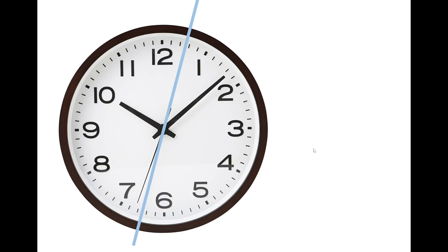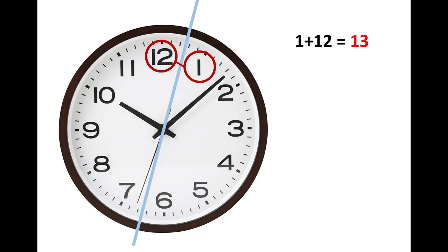If we consider a clock face and divide it into two sides — left and right — from 7 to 12, and add different numbers from the left and right sides by pairs, we get quite interesting results.